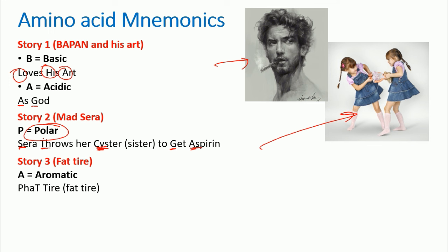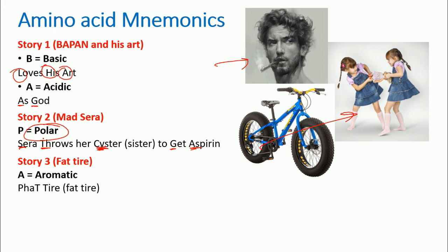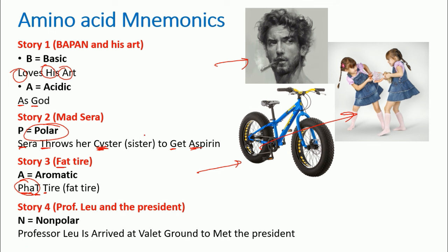Story number three is all about a fat tire — that's why I took the picture of a really fat tired cycle. I wrote it as 'Pha T' instead of 'fat' because it links with our aromatic amino acids. A is for Aromatic, and the example gives us: Ph for Phenylalanine, capital T for Tyrosine, and another capital T for Tryptophan. These are the three aromatic amino acids.